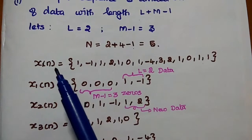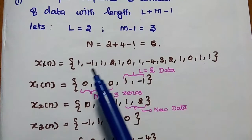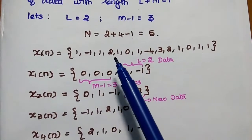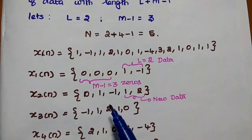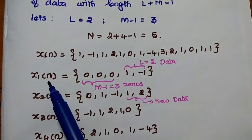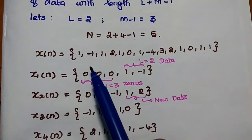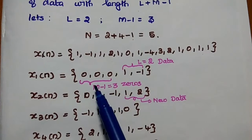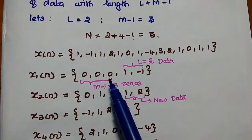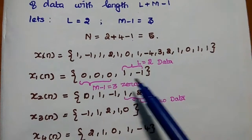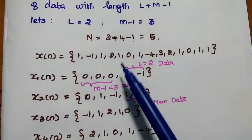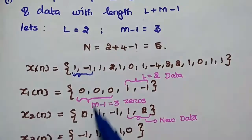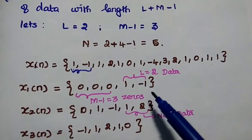Next, we are going to write the given input sequence — there are 14 data values. We are going to divide this input sequence into blocks of data with size 5. For the first block of data, the first M minus 1 points are set to 0. Here M minus 1 means 3, so 3 zeros are set for the first data block, and the remaining 2 data values are taken from the input sequence — that is the first 2 data points.